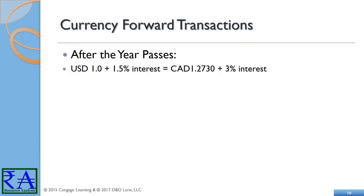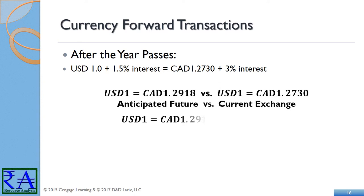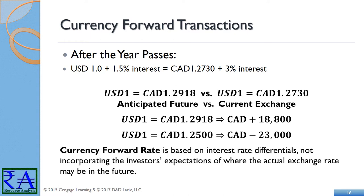By locking in the forward rate, the exporter has benefited by CAD$18,800 versus selling the 1 million US dollars at the current spot rate of 1.2730. On the other hand, if the spot rate a year from now drops to USD 1.2500, meaning the Canadian dollar weakened, the exporter would have lost CAD$23,000 by committing to the forward transaction. Currency markets are not a sure thing, so be confident about the estimates you make into contracts — they are binding on both parties.